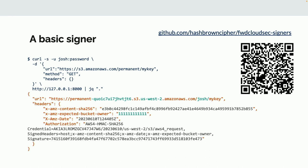The signer also changed the bucket being accessed — from 'permanent' to 'permanent' with a bunch of letters and numbers afterward — changed the region because it knew where that bucket lived better than the app did, changed the key, and imposed best practices like adding the x-amz-expected-bucket-owner header, which is a good way to ensure you're talking to the bucket you expect. Recall that buckets are a global namespace, so by default you can be talking to anyone's bucket unless you pass that header.